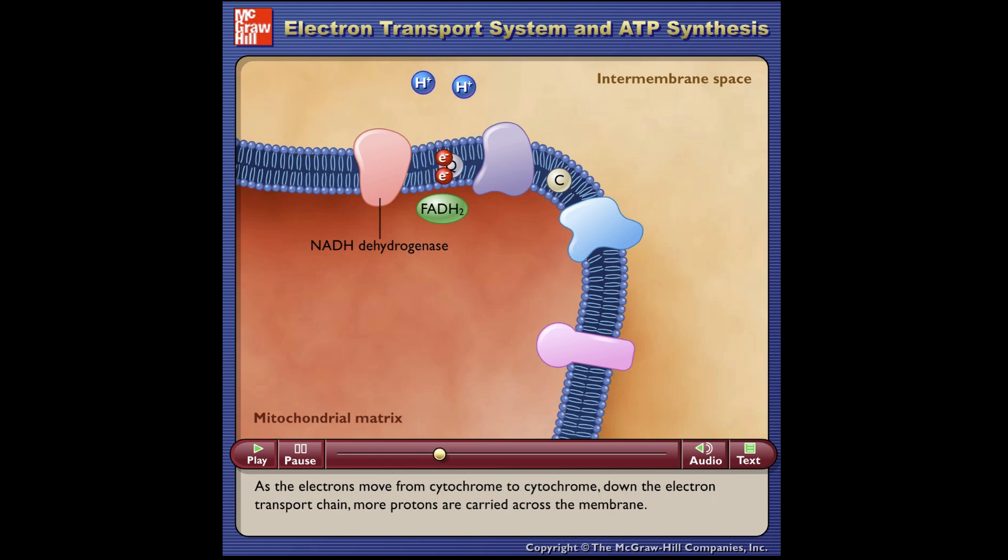As the electrons move from cytochrome to cytochrome down the electron transport chain, more protons are carried across the membrane.